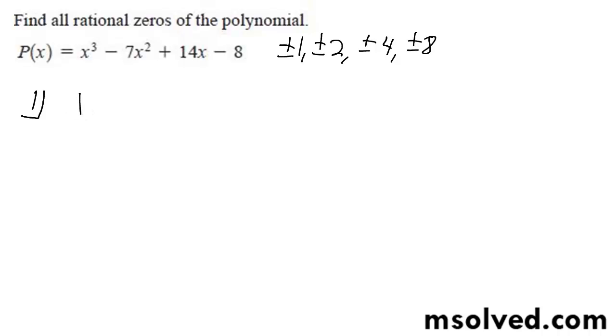Okay, 1. Our coefficients are 1, negative 7, 14, negative 8. Bring us down 1. 1, we get negative 6, multiply this, we get negative 6, we get 8, times 1 is 8, we get 0. Oh cool, so 1's a solution.